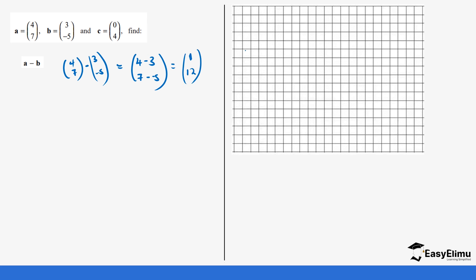If we were to show that on a plane, it means we are moving one unit on the x-axis in the positive direction, and then twelve units on the y-axis, also positive. So one, two, three, four, five, six, seven, eight, nine, ten, eleven, twelve. Our final point is here. This is our initial point and then the final point — join them using a straight line.